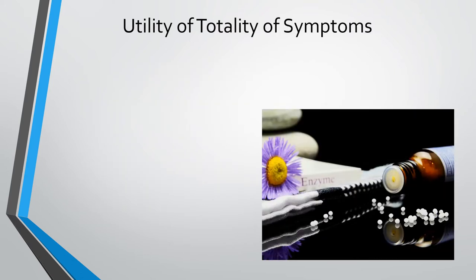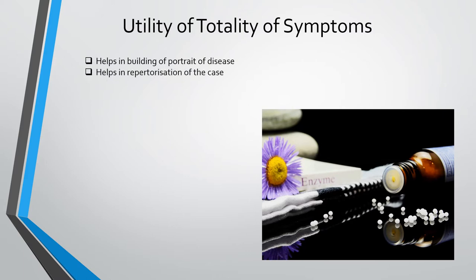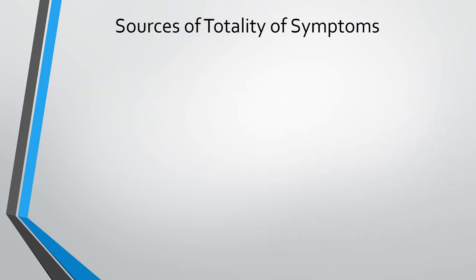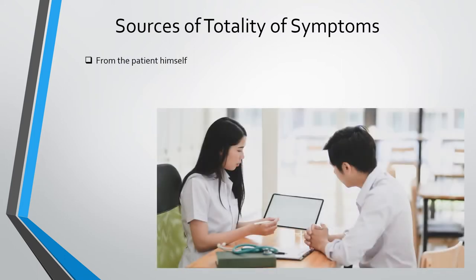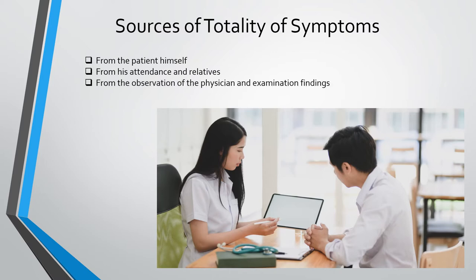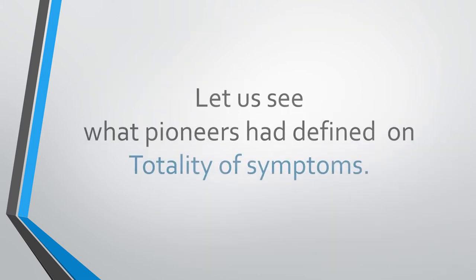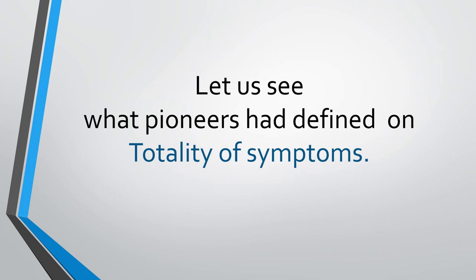The utility of totality of symptoms includes: helping in building a portrait of the disease, helping in repertorization of the case, helping in selection of the simillimum, and helping in better understanding of drug picture. Sources of totality of symptoms include: from the patient himself, from his attendants and relatives, from the observation of the physician and examination findings, and from past personal, social history, habits, and family background.